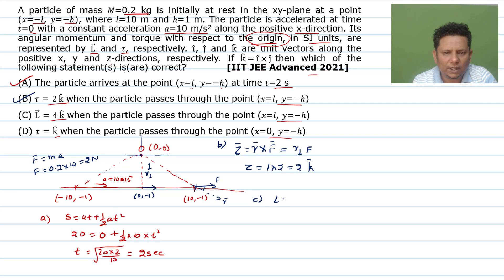Now evaluating option C. L vector is written as r cross p, or we can write this as r perpendicular times p. Now r perpendicular is 1. Let's calculate momentum. This will be equal to r perpendicular multiplied by mv. So r perpendicular is 1, mass is 0.2. Now we need to find the value of v.